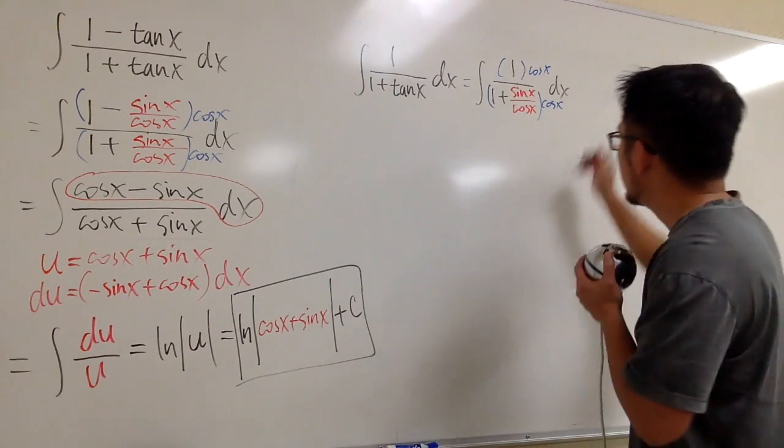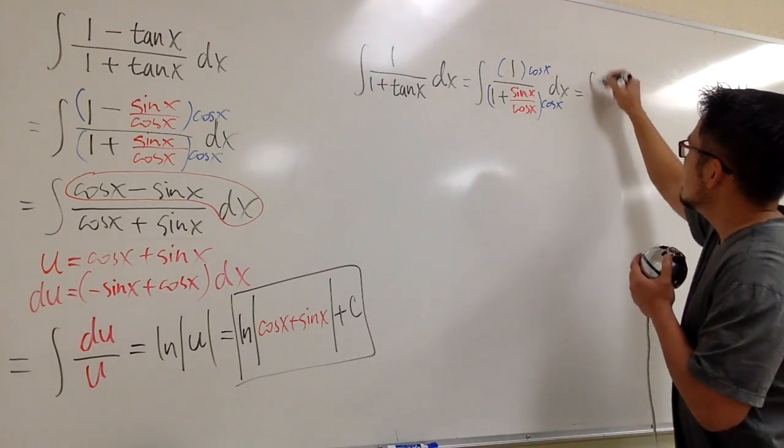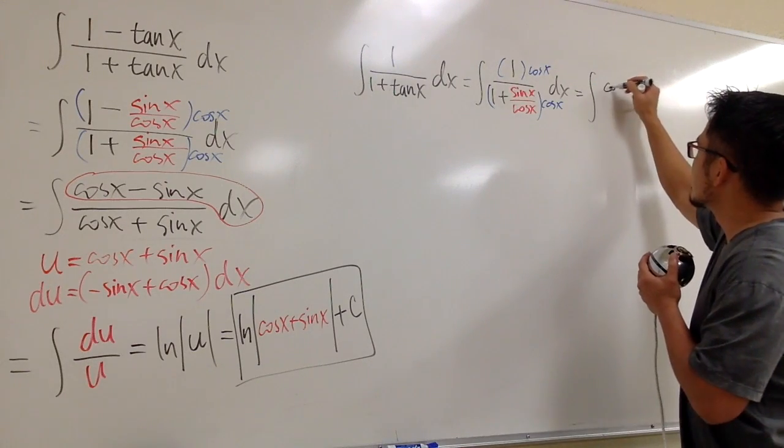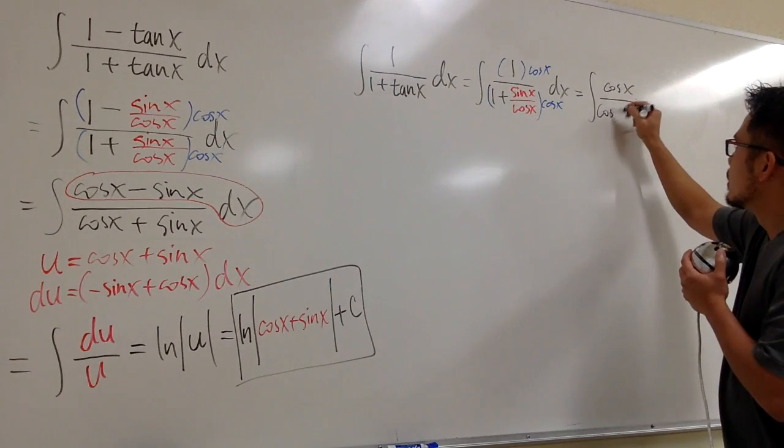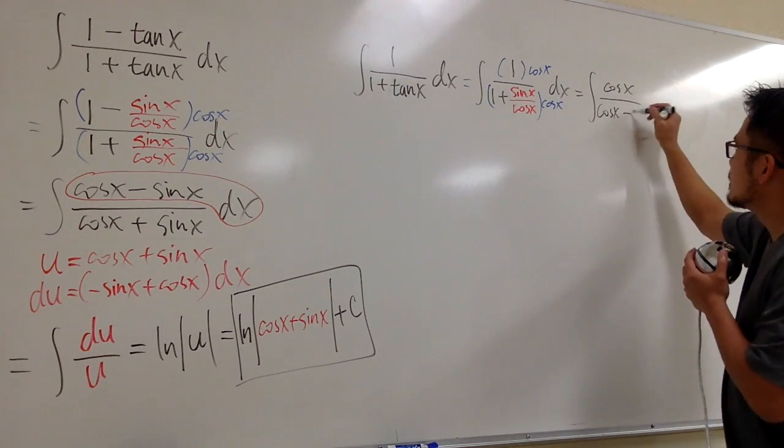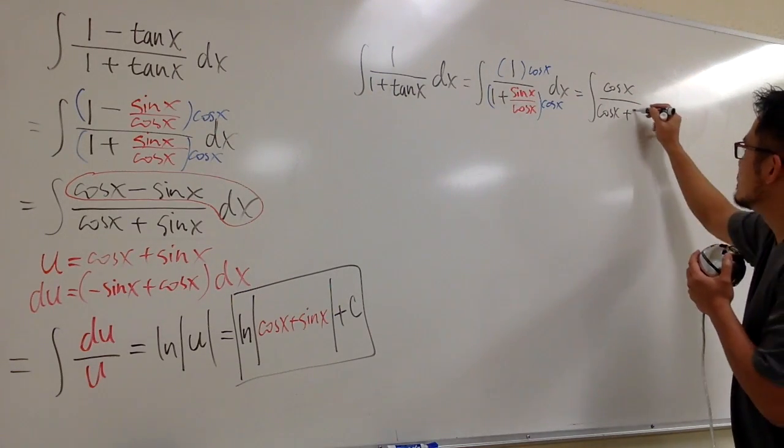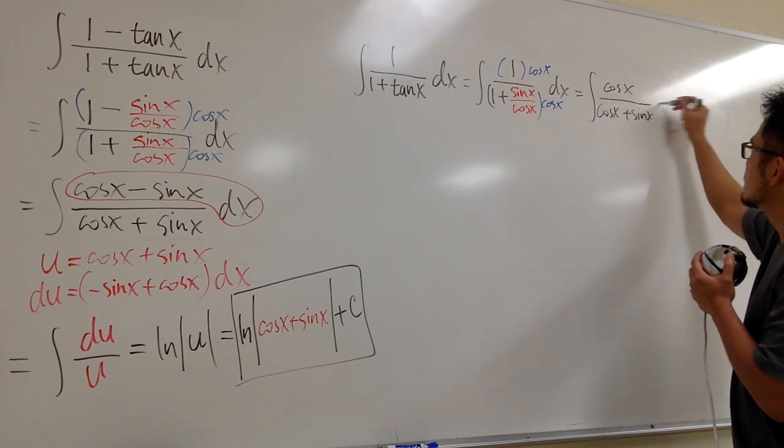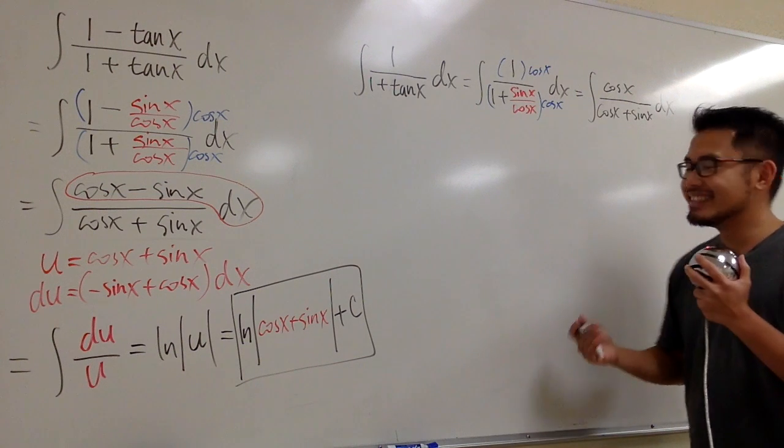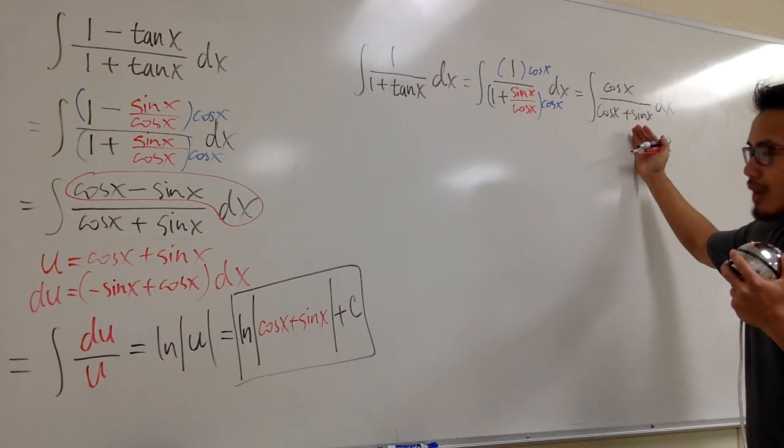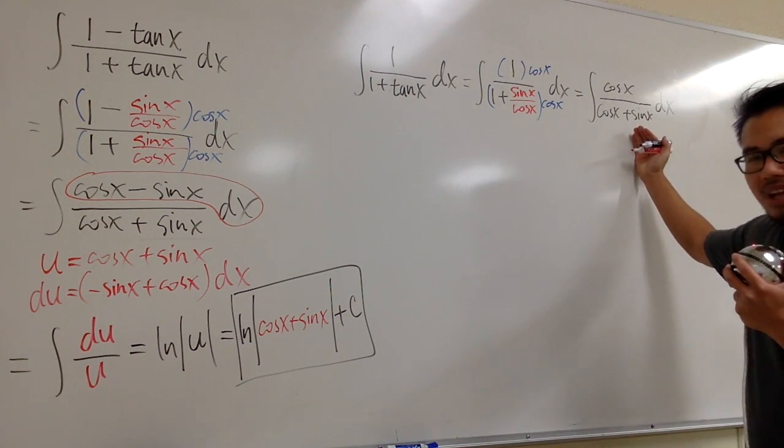And when we do that, in this case, we'll end up with integral of just cos x on the top, over this times that which is cos x, and then we add it with this times that which is just the sin x.